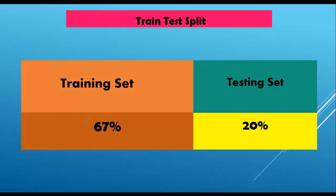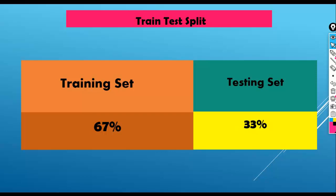We can also use 67% for training and keep aside 33% for testing, or use 50% data for training and 50% for testing. But the most common split percentage is 80-20. Please remember this percentage is totally dependent on the size of your dataset, but the most common splitting percentage is 80-20.